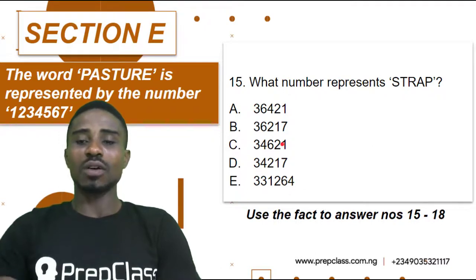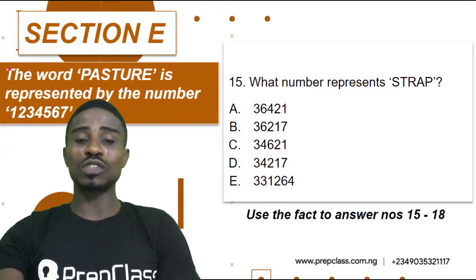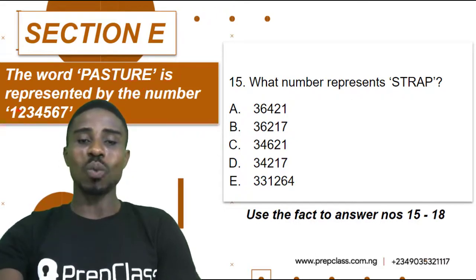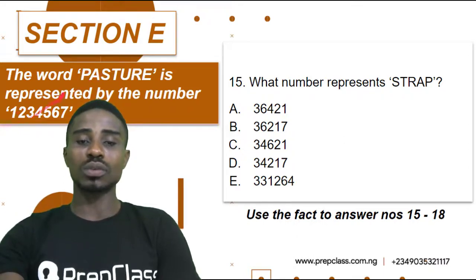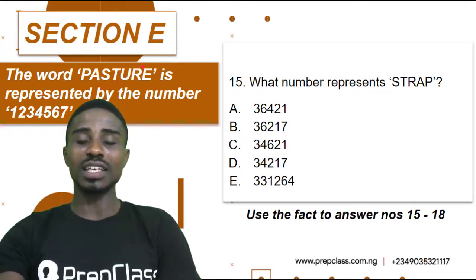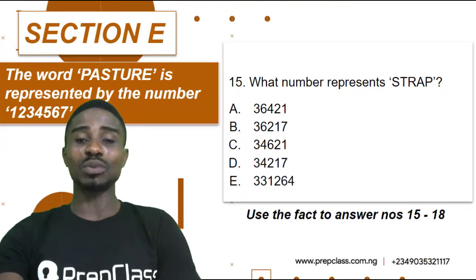Section E. This is the sample we will use in solving questions 15 to 18. The word PASTURE is represented by 1, 2, 3, 4, 5, 6, 7. What this basically implies is that wherever we see P, we represent it with 1; A with 2; S with 3; T with 4; U with 5; R with 6; and E with 7. Let's put this sample to practice and see how we select our correct answers.